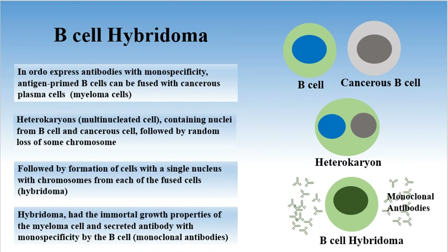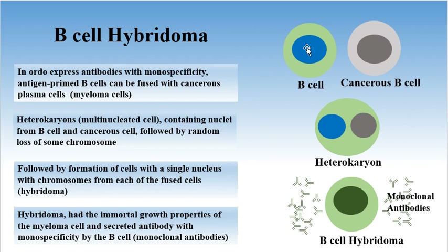B-cell hybridoma: in order to express antibodies with monospecificity, antigen-primed B-cells can be fused with cancerous plasma cells or myeloma cells. This will lead to formation of a heterocaryon, which is a multi-nucleated cell, taking nucleus from the B-cell and the cancerous cell.